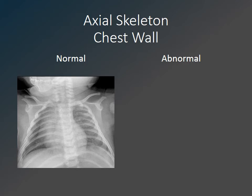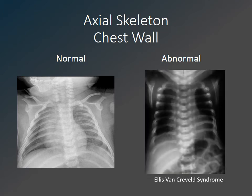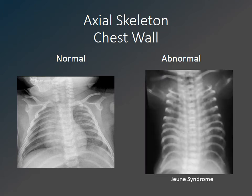Assessing the chest and ribs is also important. Some skeletal dysplasias result in a narrow chest and shortened ribs, as in this patient with Ellis-van Creveld syndrome, also known as chondroectodermal dysplasia, showing a clear difference in the width of the chest and the length of the ribs. Here is a patient with Jeune syndrome, also known as asphyxiating thoracic dysplasia, who has an extremely narrow chest and short ribs.